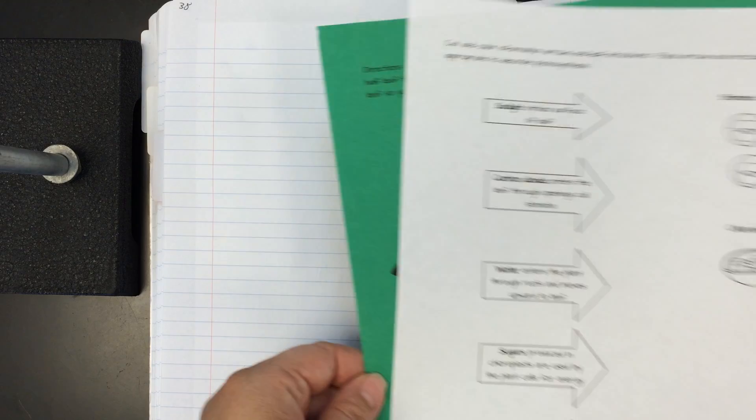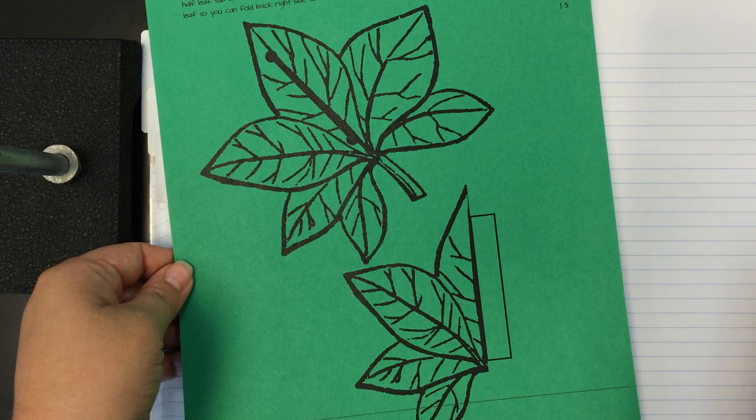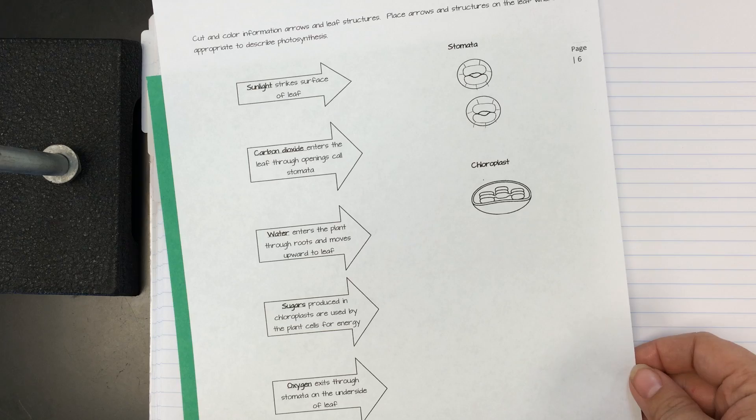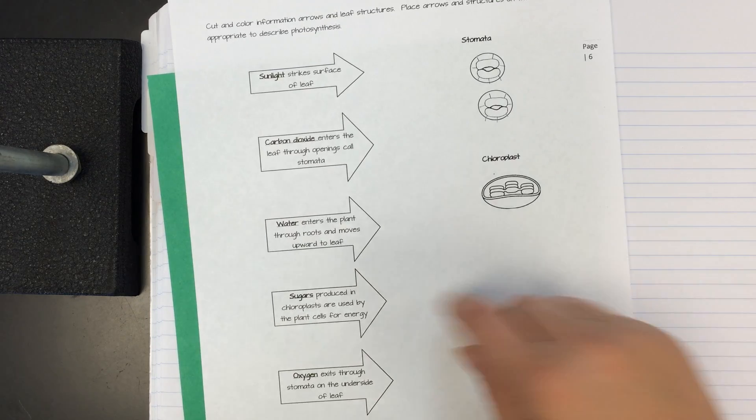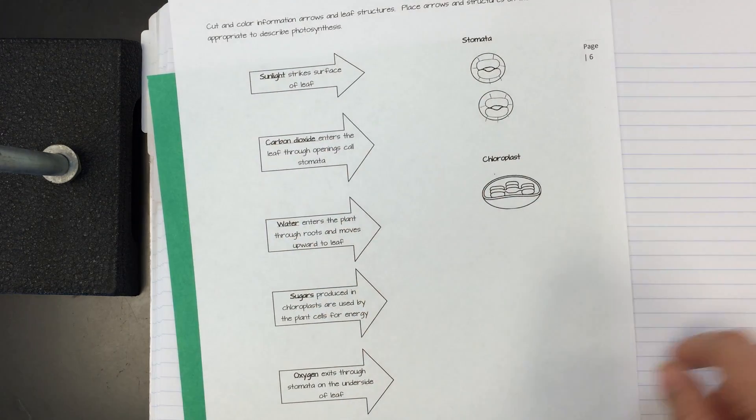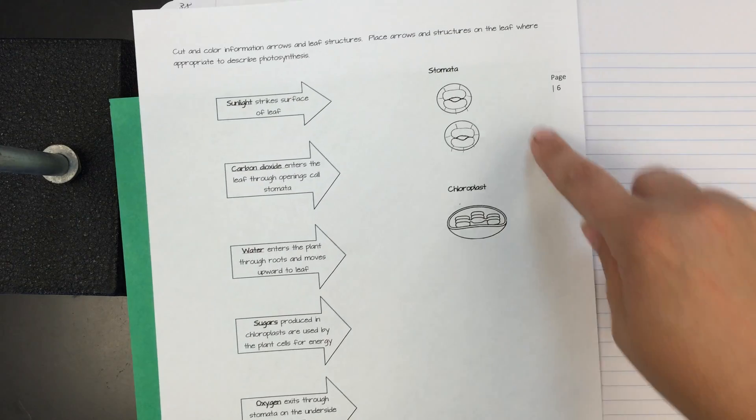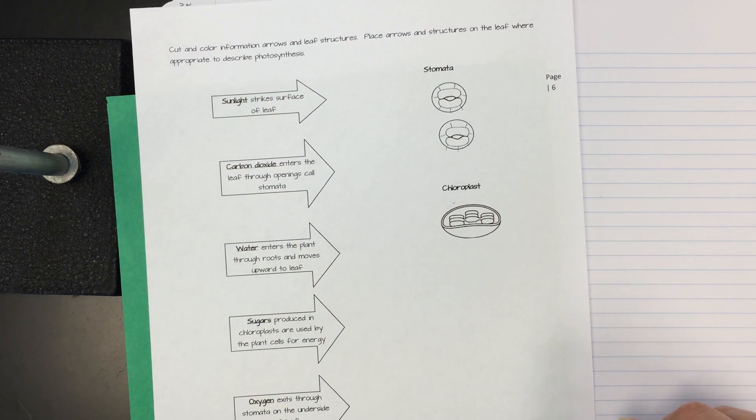So to make this you need two documents: one is the green printed out leaf and the other is the one with the arrows. Before you cut these out, I recommend you go ahead and color them all different colors because it'll look a lot prettier in the final one, including your stomata and your chloroplasts.